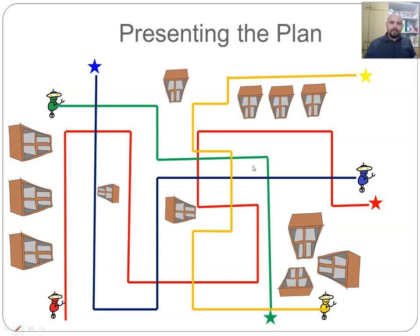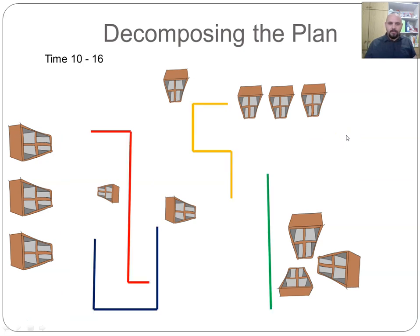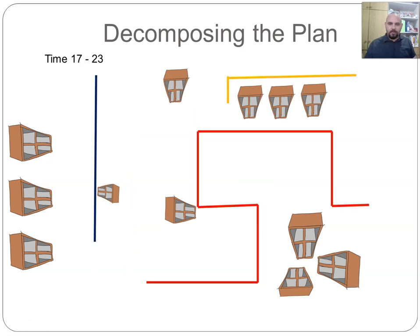Instead of presenting the entire set of paths, we only present time intervals of the plan such that within each time interval, the paths themselves are not only not colliding, but also disjoint. For example, in this plan, if we take the first nine time units and just present them—so at times one to nine, the red agent only followed this path, the green agent only followed this prefix of a path, and so on—it's very easy to see that the paths are vertex disjoint. And if we take the second time segment, the paths themselves are again disjoint, and a third time segment that completes the plan is also vertex disjoint.